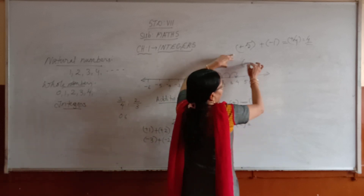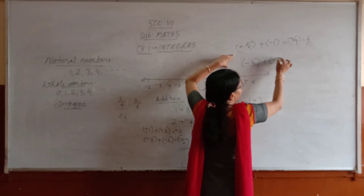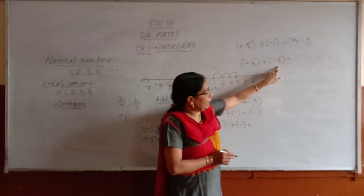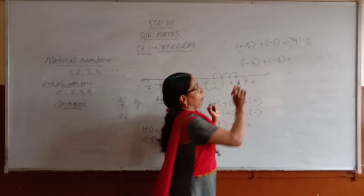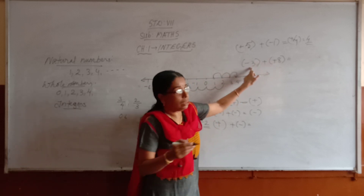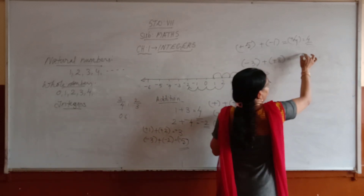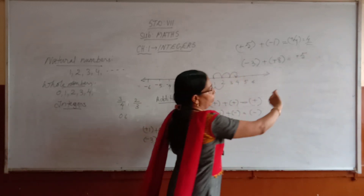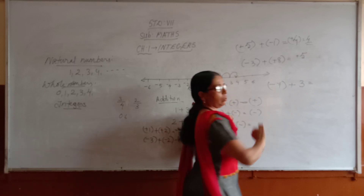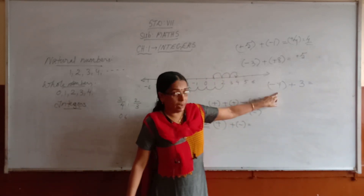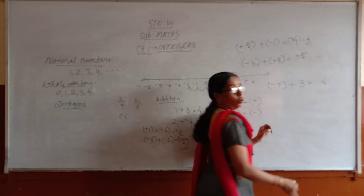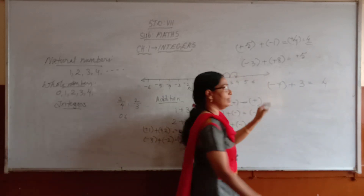Same way for negatives: minus 3 plus 8. Without considering the sign, the bigger one is 8, the smaller is 3. 8 minus 3 equals 5. The sign of the bigger number is plus, so the answer is plus 5. One more example: minus 7 plus 3. The bigger one without considering sign is 7. Difference between 7 and 3 is 4. The bigger number is 7, its sign is minus. So the answer is minus 4.